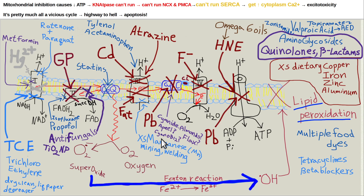Some people think it's fine to take cyanocobalamin-type B12. I think that's stupid. They'll tell you there's not that much cyanide in it — but all this stuff adds up. My mechanism here might be cytochrome oxidase instead of cytochrome C, but they're right next to each other. Cyanocobalamin contains cyanide — not a good idea. You're much better off with methylcobalamin.